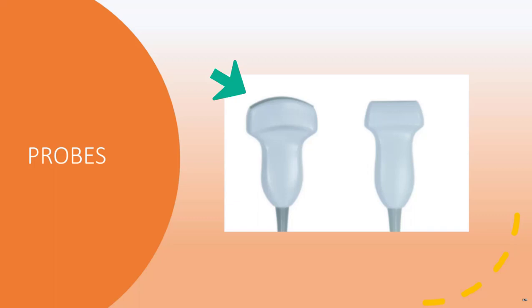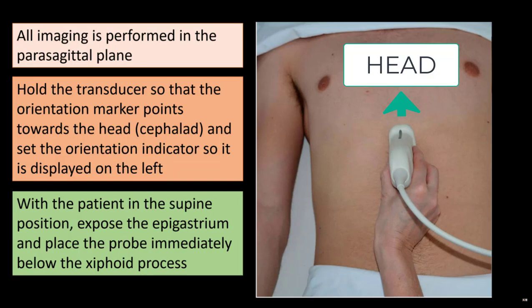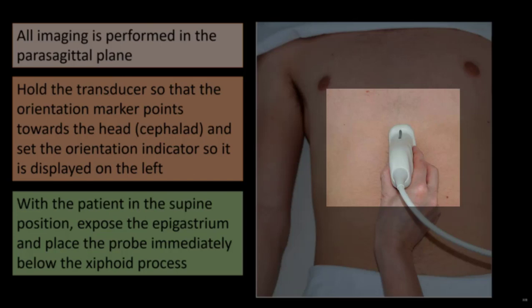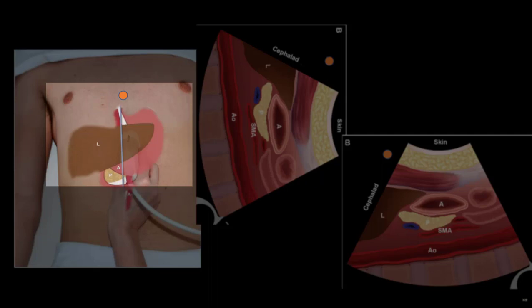Our scanning will take place in a parasagittal or sagittal plane. We will hold the transducer so the transducer marker is pointed towards the head. Make sure that you set your marker or indicator on screen to be on the left side of the screen. With the patient in the supine position, we will place the probe in the epigastrium immediately below the xiphoid process. We will scan the abdomen in a lateral plane from left to right, keeping the probe perpendicular to skin, and identify stomach, liver, pancreas, superior mesenteric artery, aorta, and inferior vena cava.